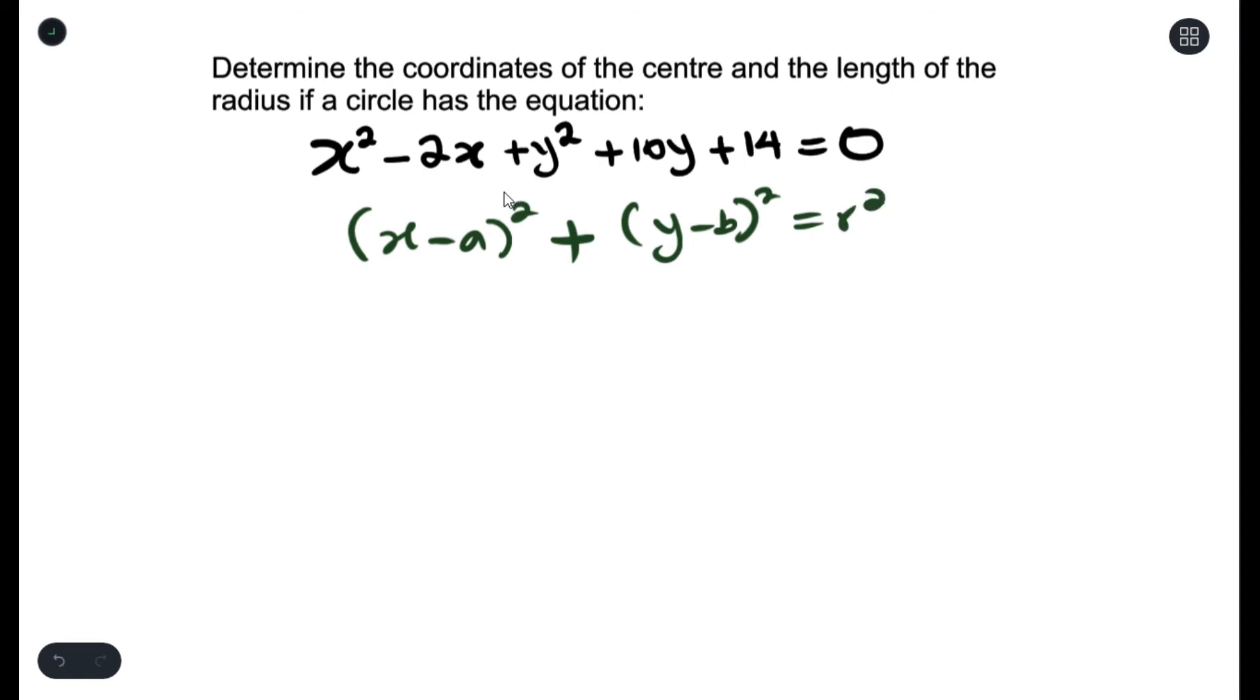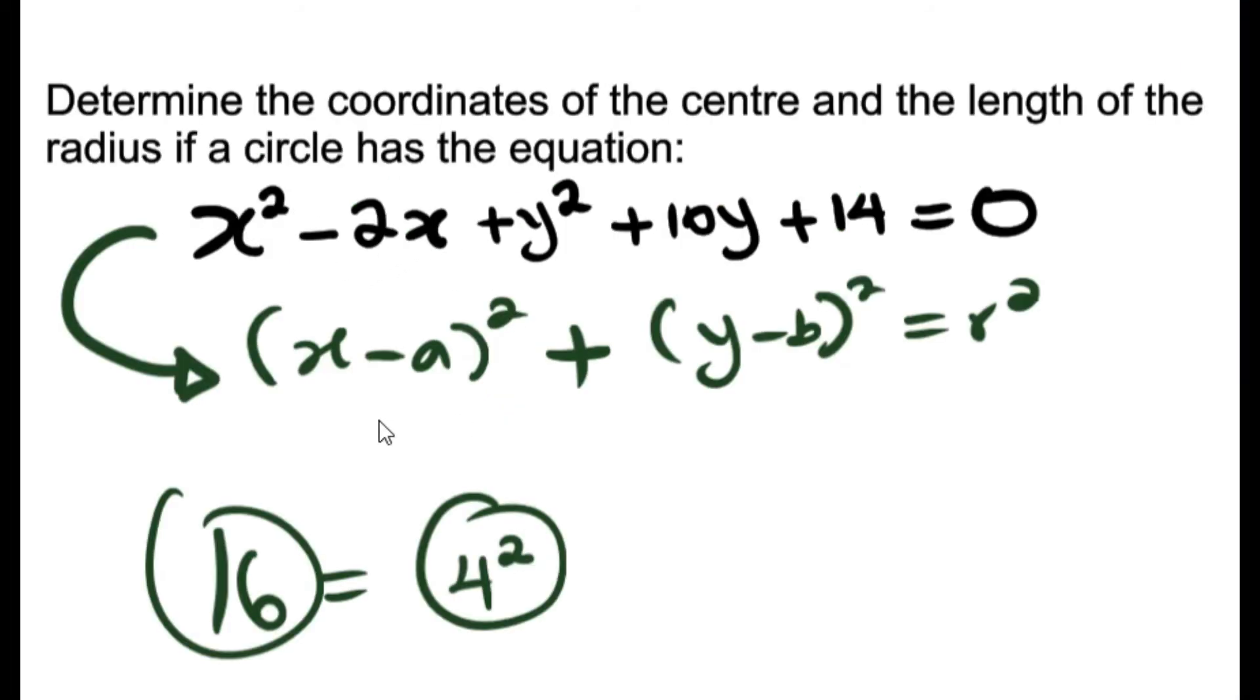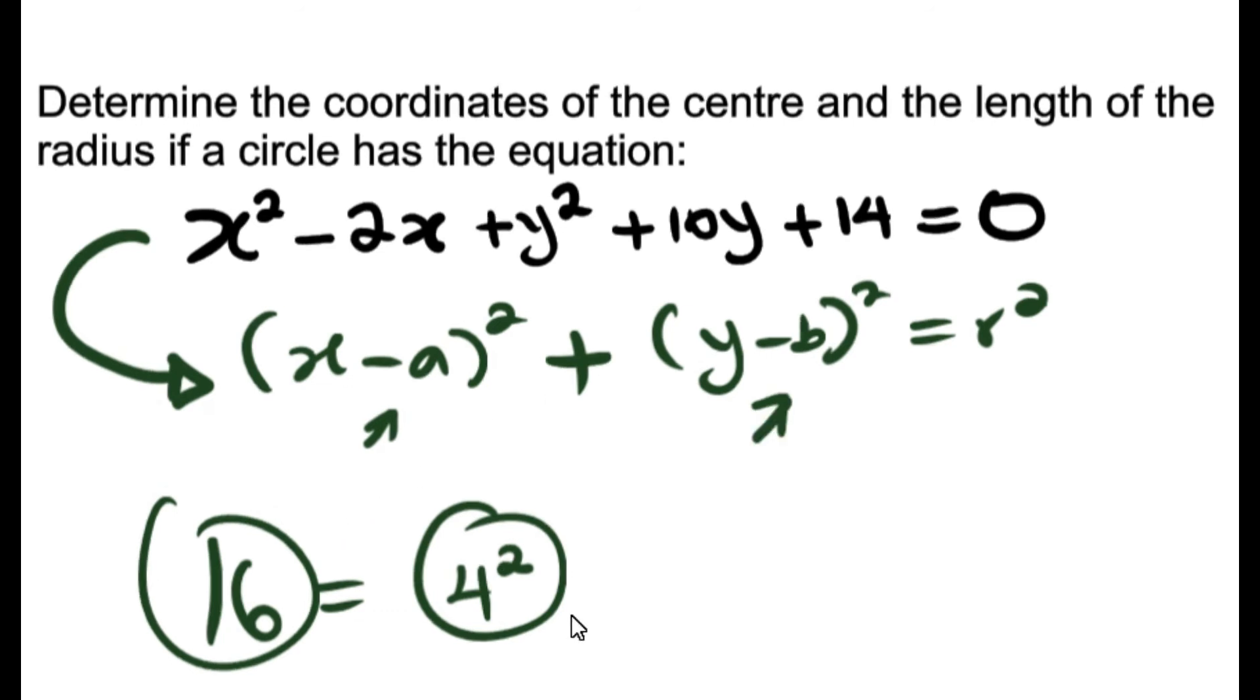The only way you can change it from here to this is by doing completing the square. The concept of completing the square is making your x and your y into perfect squares. A perfect square is a number that whenever you square root gives you a whole number. So a perfect square is something like 16. We understand that 16 can be written as 4². So we literally want x²-2x to look like a perfect square. The same thing also applies to y²+10y.